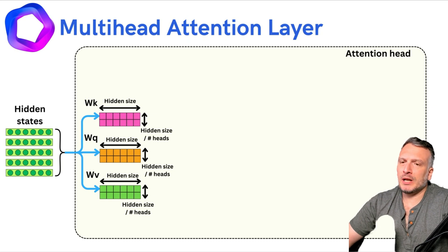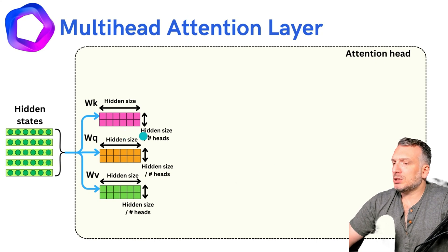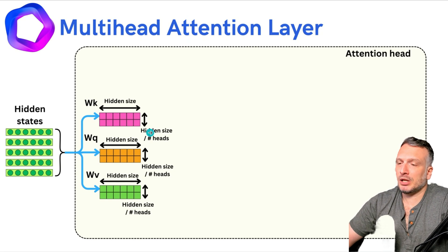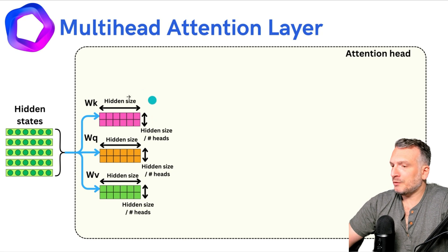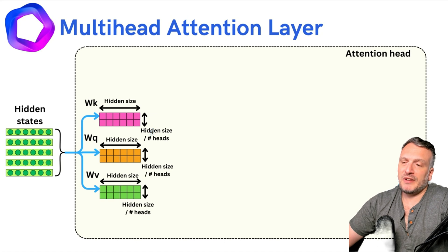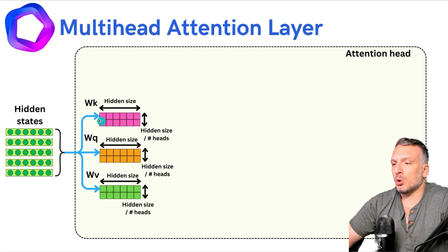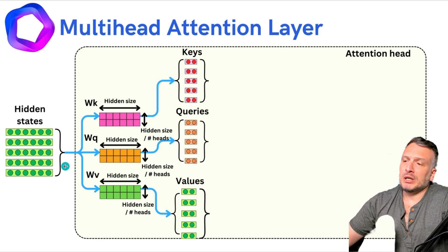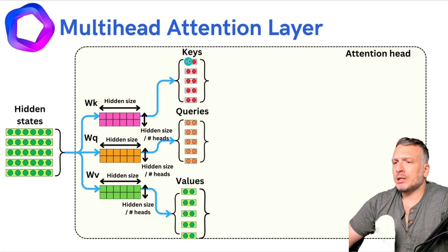Let's look more precisely at one attention head and how we generate hidden states with a smaller dimension. The way to do that is to change the dimensions of the different linear layers within an attention head. Instead of the number of output features equaling the number of input features, we set the output features equal to the hidden size divided by the number of heads. So if the hidden size is six and the number of heads is three, we get six divided by three equals two — that's why we have only two rows in this linear layer. This applies to all linear layers: the keys, queries, and values.